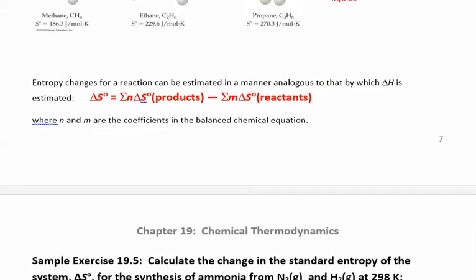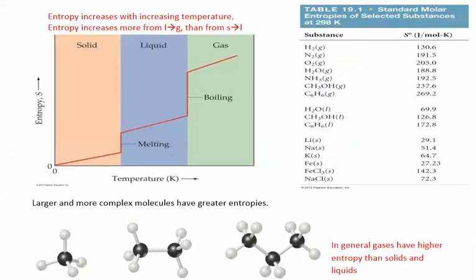To find the change in entropy for a reaction, you look at the entropy of your products minus your reactants. The superscript zero means delta S° — everything is under standard conditions. Whenever you look at a table like this, everything is under standard conditions, and the reference temperature is usually 298 Kelvin, which is room temperature. The standard conditions are defined in a different table in this chapter.